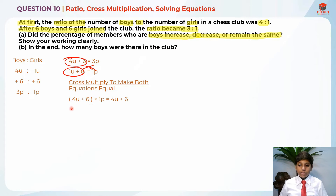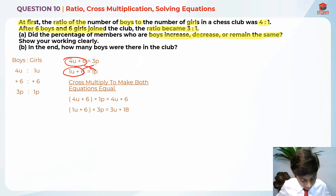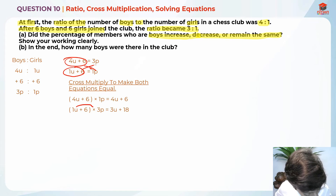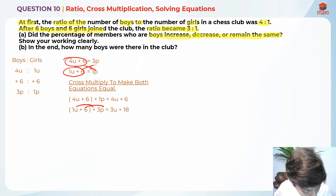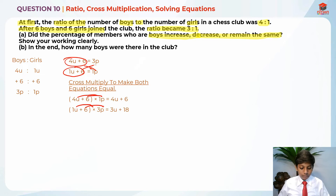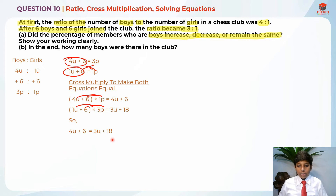Then 1 unit plus 6 times 3 parts gives us 3 units plus 18. So 6 times 1 and 4 times 1, and 6 times 3. After this, I can write down the equation: 4 units plus 6 is equal to 3 units plus 18.